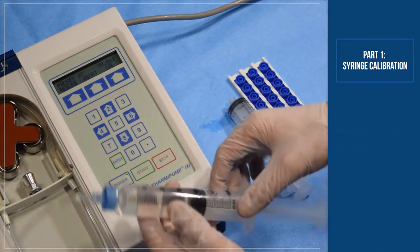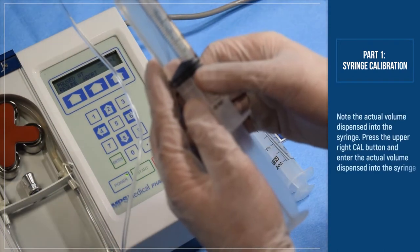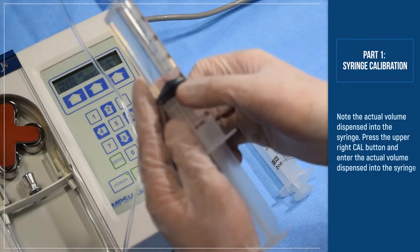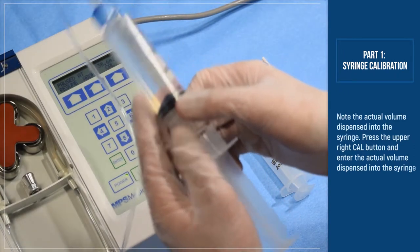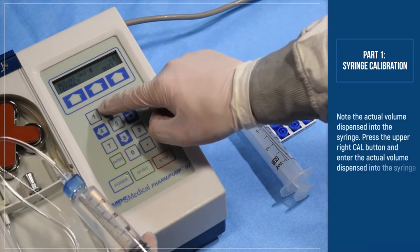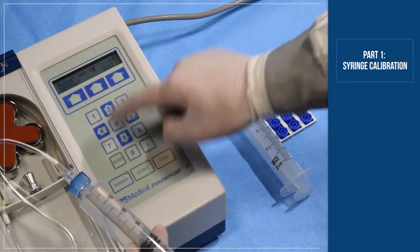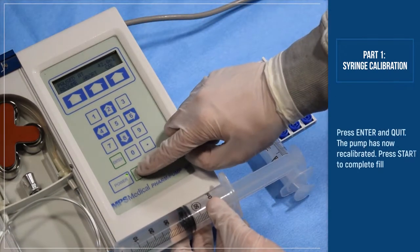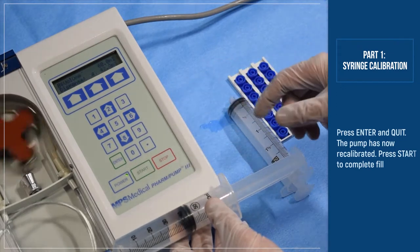Press stop. Note the actual volume dispensed into the syringe. Press the upper right hand corner Cal button and enter the volume. Cal. Actual volume dispensed. Enter. Quit. The pump is now recalibrated. Press start to resume the fill.